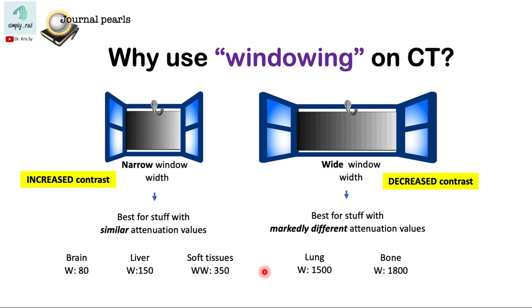So for tissues with similar attenuation values, like in the brain, the liver, or soft tissues, we use a relatively narrow window width. And for tissues with markedly different attenuation values, we use a wide window width. That's it, thank you for listening.